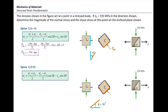Sigma_x, sigma_y, and tau_xy are going to be the same. Theta is now positive 50 degrees. Plugging the numbers in, it is not a surprise that I get the same magnitude of normal stress on that plane: sigma_t equals negative 19.6 MPa.